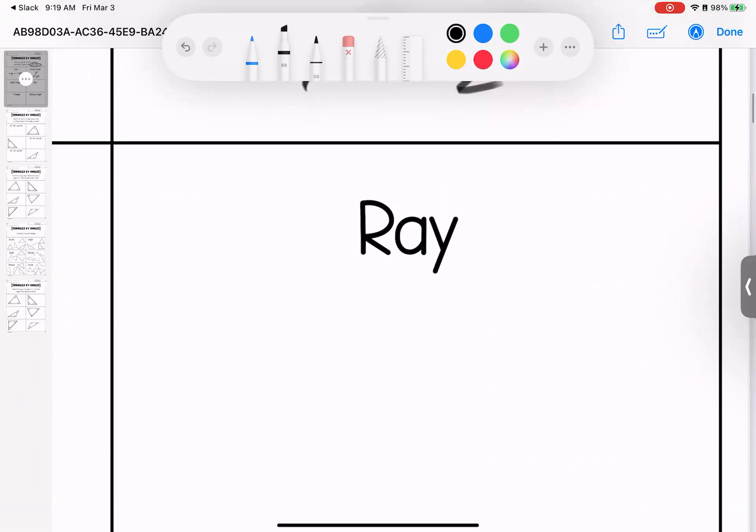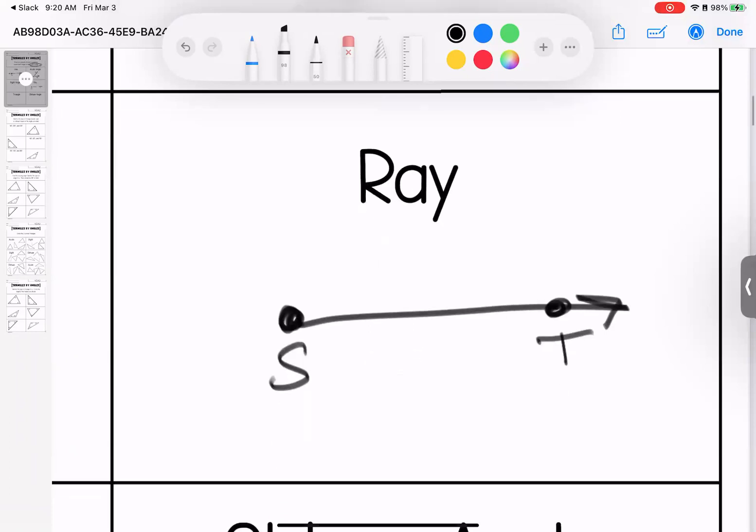Down here, I need a ray. A ray has a stop and a go. I'm going to call this S-T. Remember, two rays together at a shared vertex make our angle.